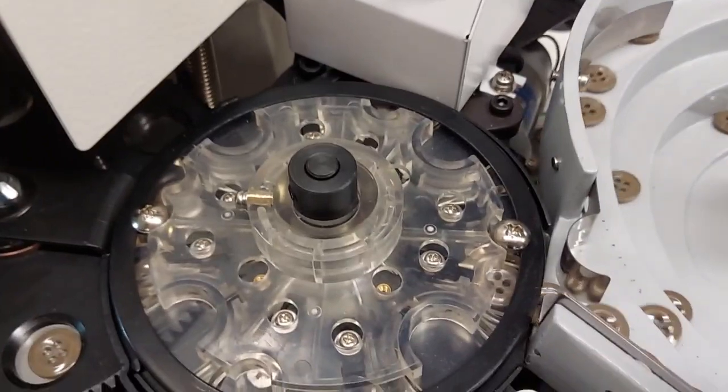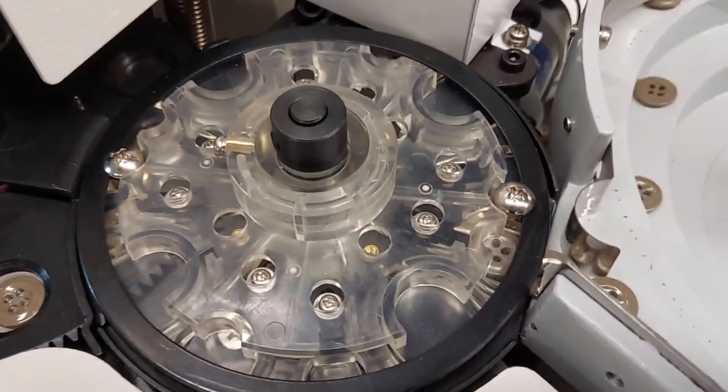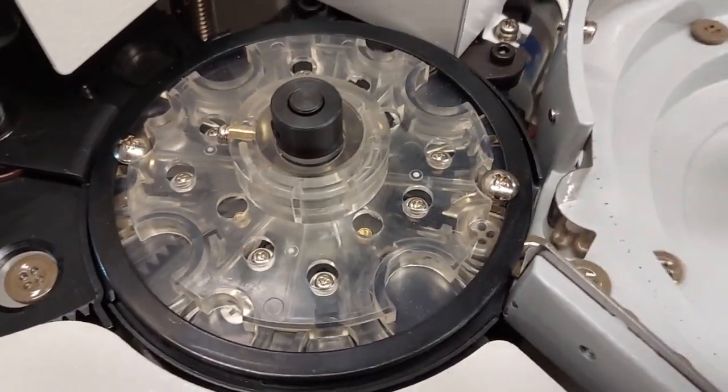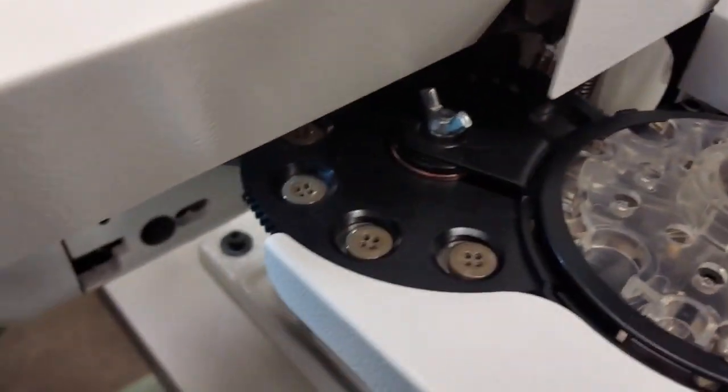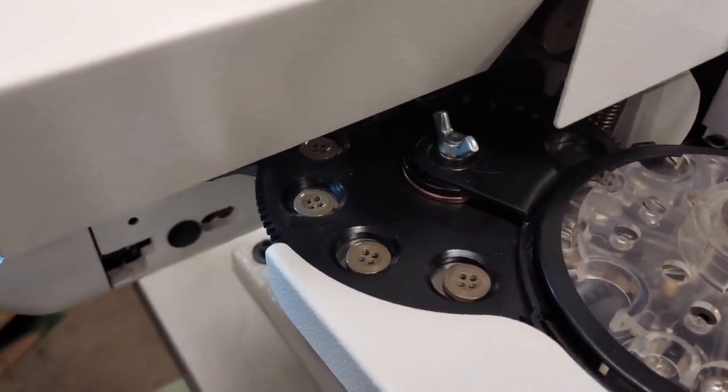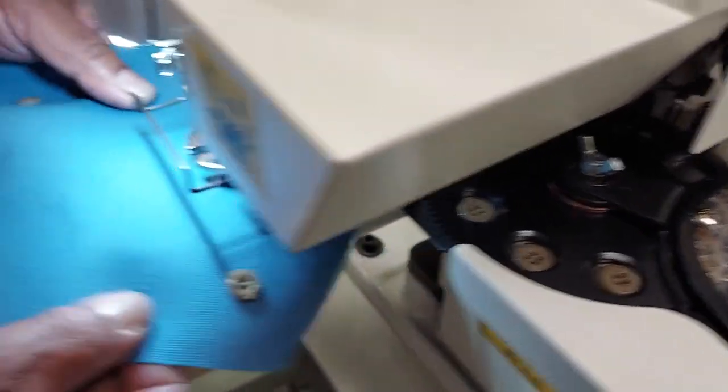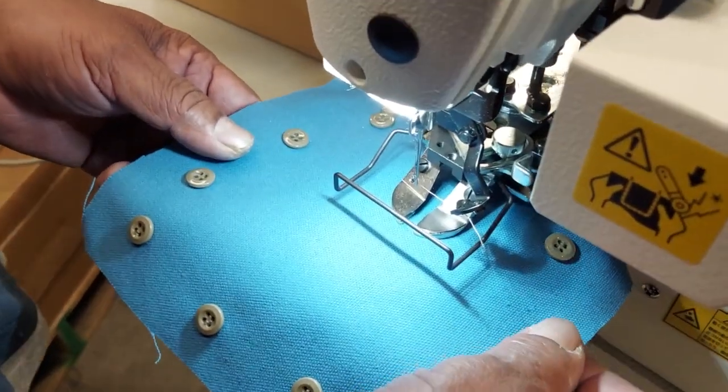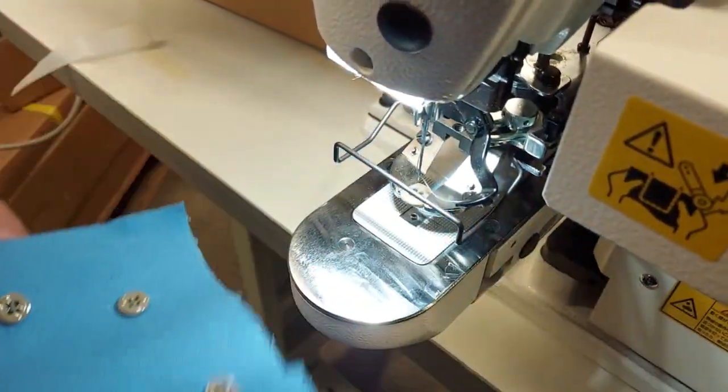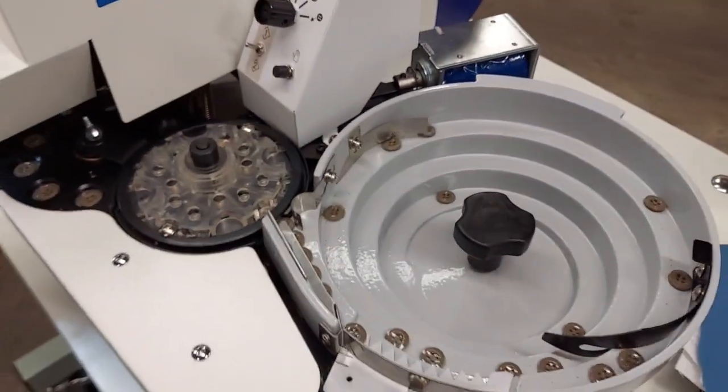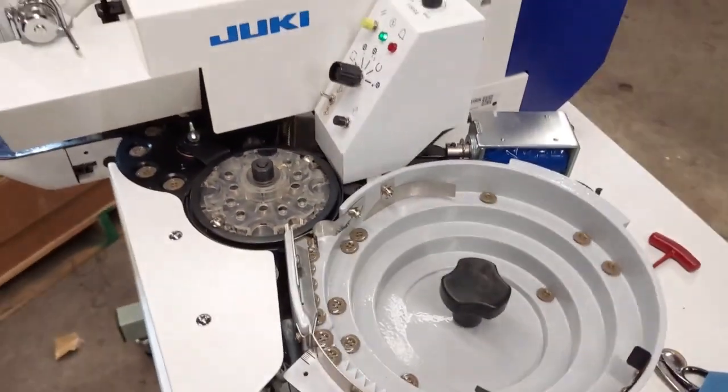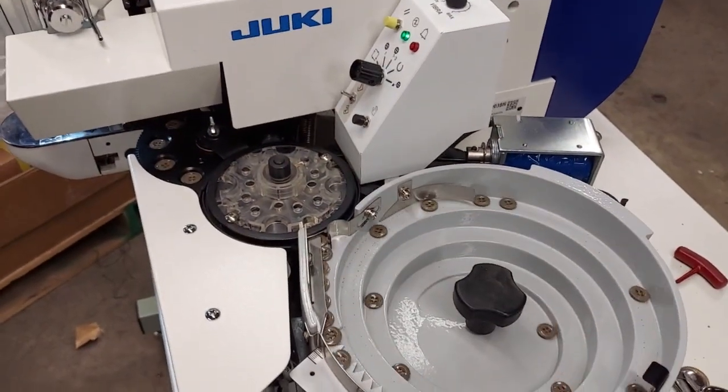See the buttons get fed into here. And it moves into that section there. And then eventually loads it into the sewing machine. There's a button in there, and then you can see the next button in the middle, you can see it on the tip, and it goes down here.